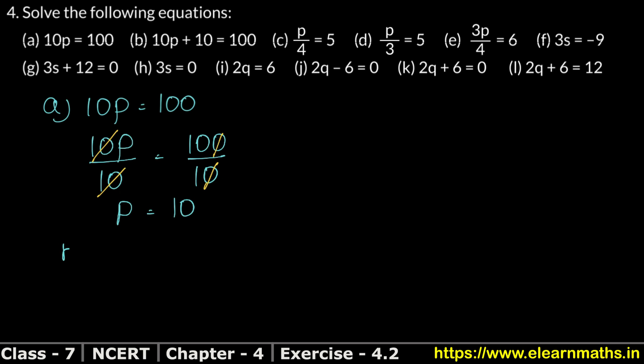Now let's do Part B. When we solve, we do it with the opposite sign. Here we have to divide as the next step. Part B is: 10p plus 10 equals 100. So here is plus 10.